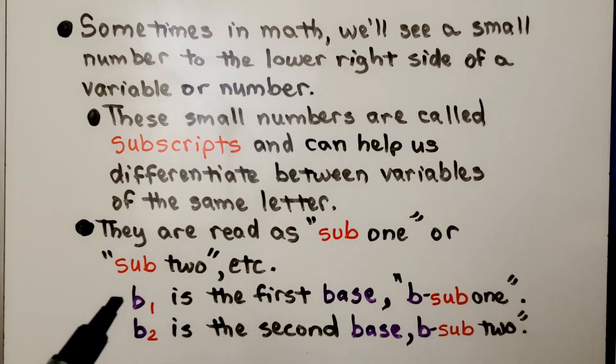Here we have b, which is going to stand for our base. This b with the little one down here is the first base. We read it as b sub 1. If we see a little 2 next to the b, that's the second base. It's b sub 2. So the first one might be the top of a trapezoid and the second one is the bottom of the trapezoid.